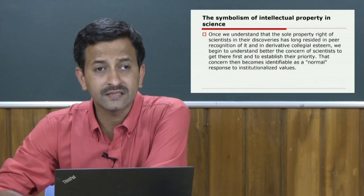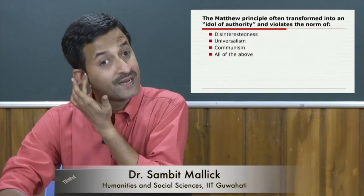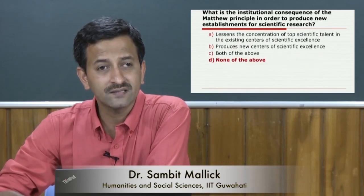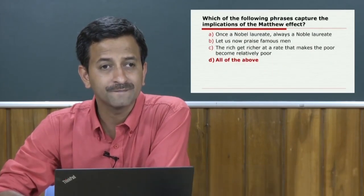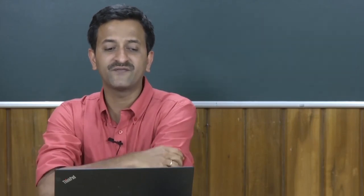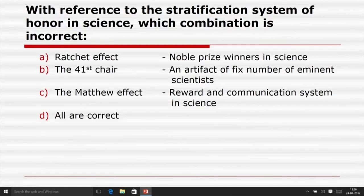Let us do a few exercises. They may not appear in your final test, but it is important to do some kind of exercise on the basis of this module. With reference to the stratification system of honor in science, which combination is incorrect? Ratchet effect, Nobel prize winners in science, the 41st chair, an artifact of fixed members of eminent scientists, the Matthew effect, reward and communication system in science — all are correct. Which combination is incorrect?